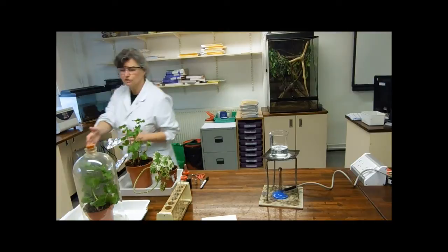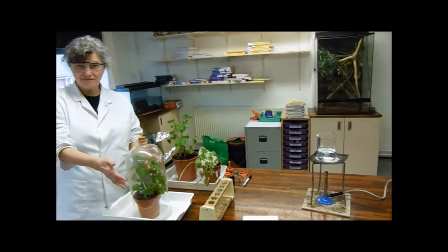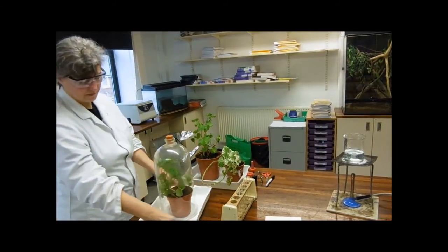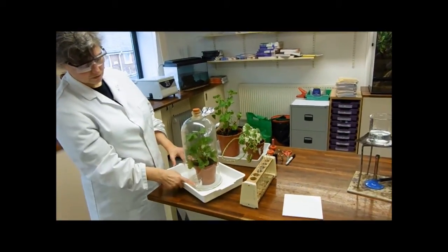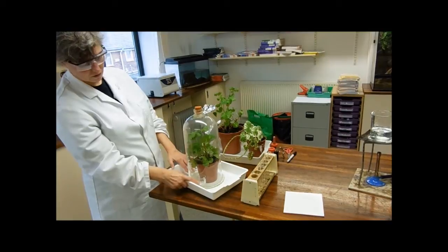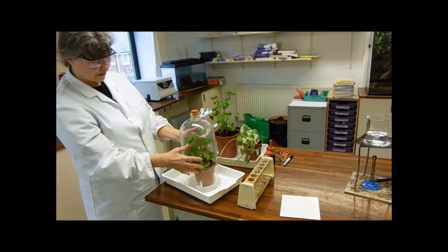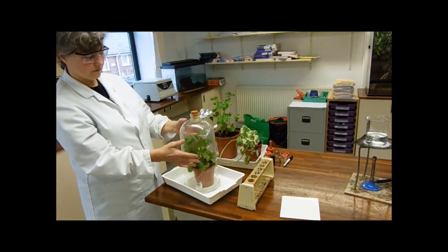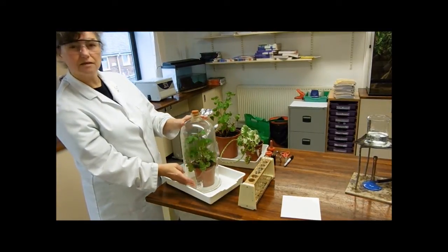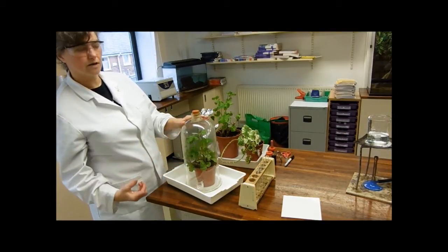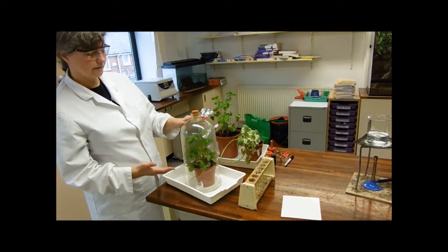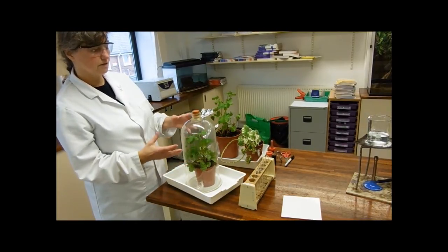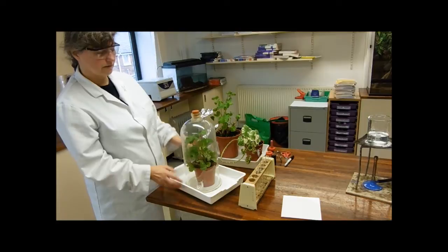Finally, in this super-duper bell jar here, we have a little jar here of potassium hydroxide pellets. This bell jar has been sealed to the tray with Vaseline, so inside of here, the potassium hydroxide is taking away the carbon dioxide. If this plant needs carbon dioxide to photosynthesize, it's going to show that it's not.